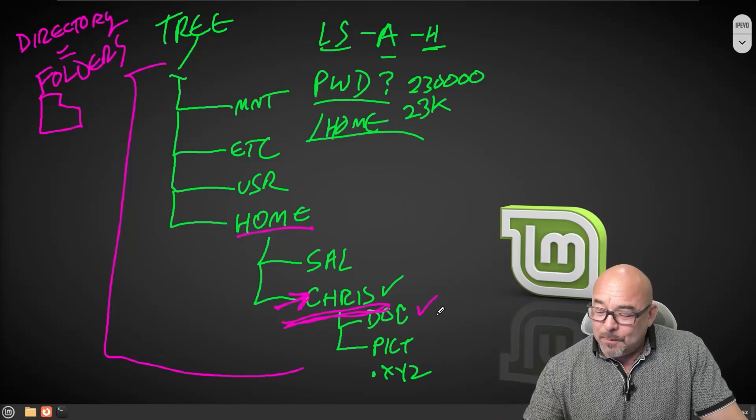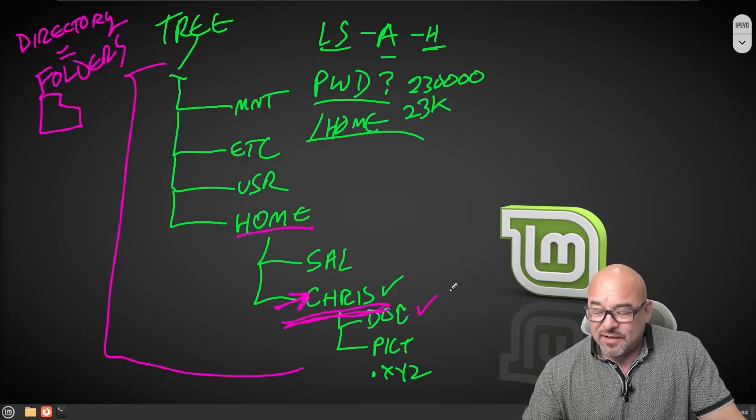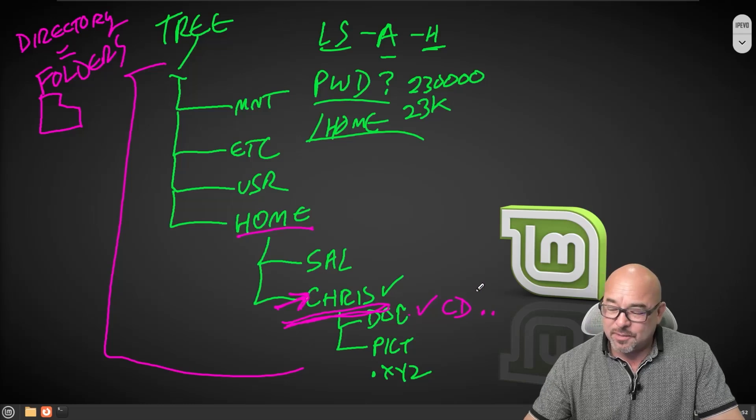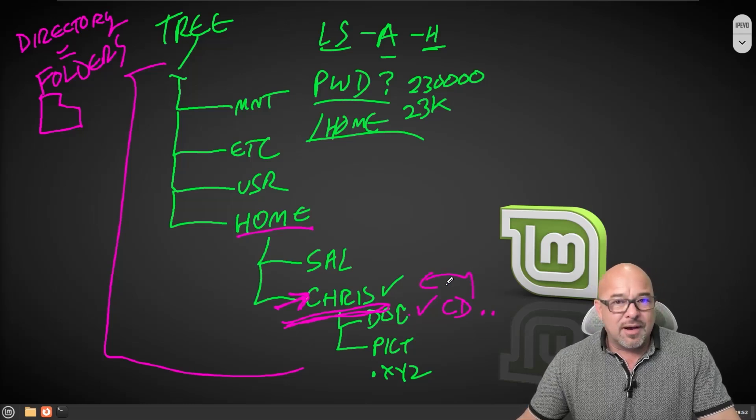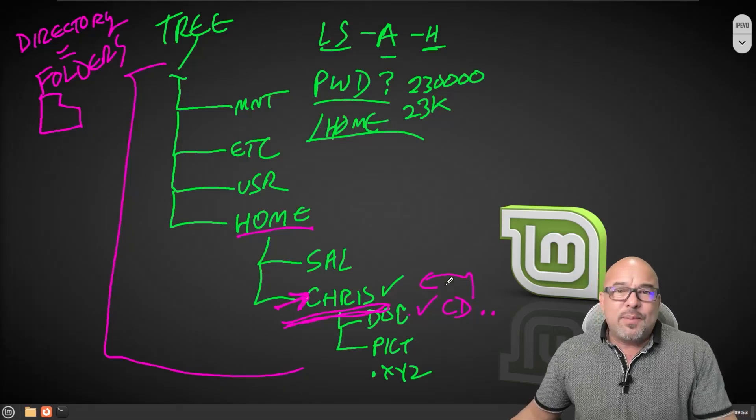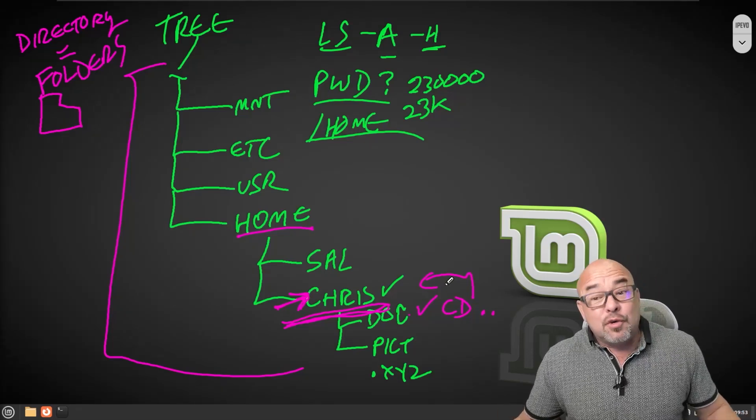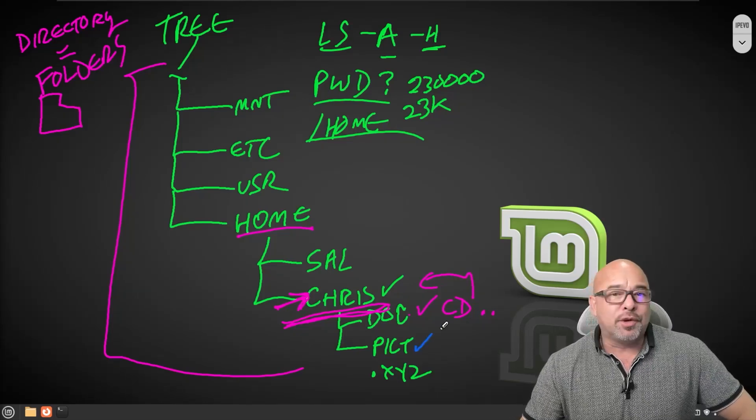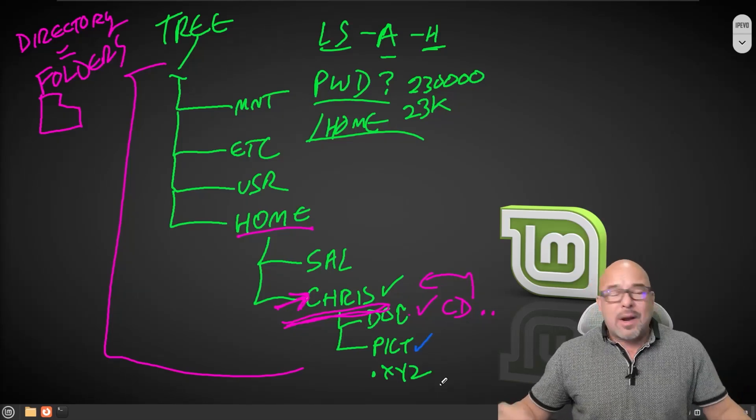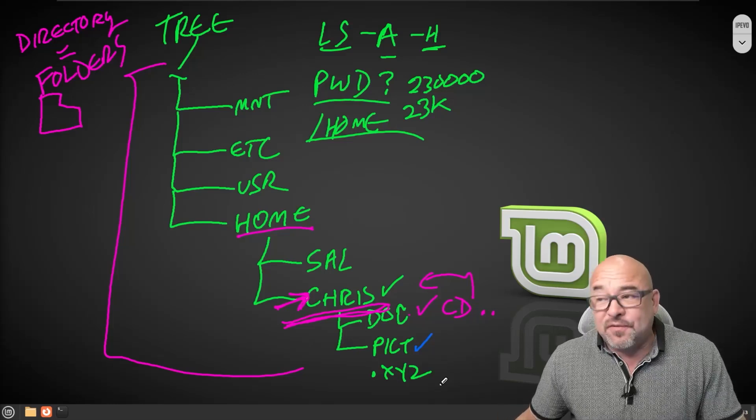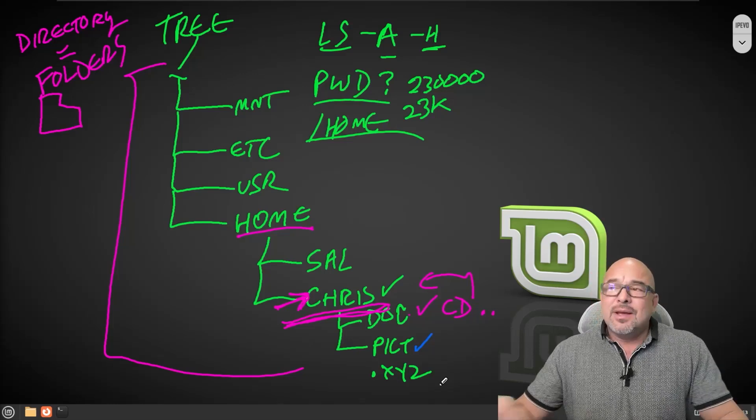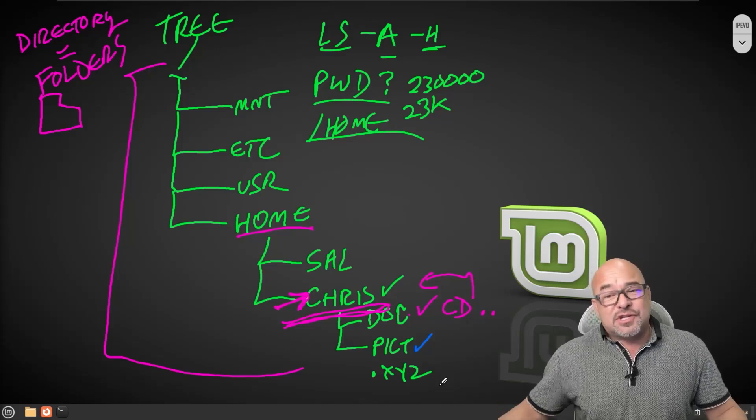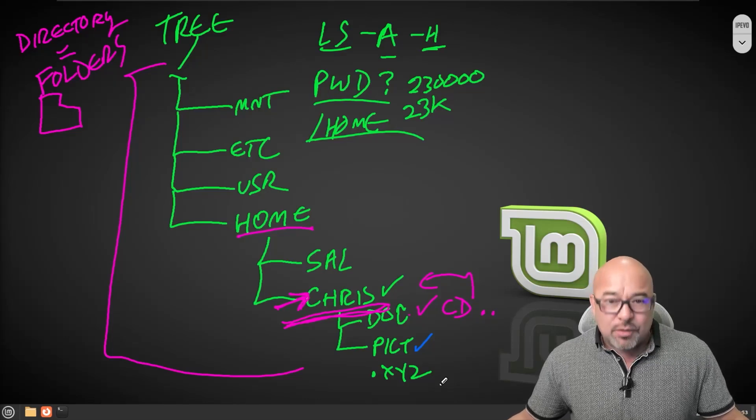But in order to go up a level, so I'm in docs and I want to go up to the Chris level, I could do a CD and then a space and then a dot dot. Again, I'll demo all of this coming up. And that would take me up to the next level up. And there's also something we should be aware of, and that would be something called the absolute path and the relative path. So let's say that Chris here is in his pictures folder and he wants to, I don't know, write a script of some kind. If you haven't heard me talk about scripts before, they're very handy files that contain multiple instructions in one file that can all be run. And then when it runs that script, it can do a whole bunch of different things for you.